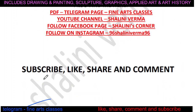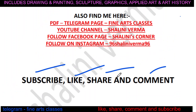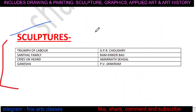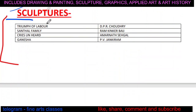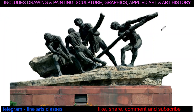If you are new to my channel, please subscribe, like, share with your friends, and comment in the comment section. Now let's talk about sculptures — murtikala. We have four artworks or four sculptures. Number one is Triumph of Labour, an artwork by DP Ray Chowdhury.